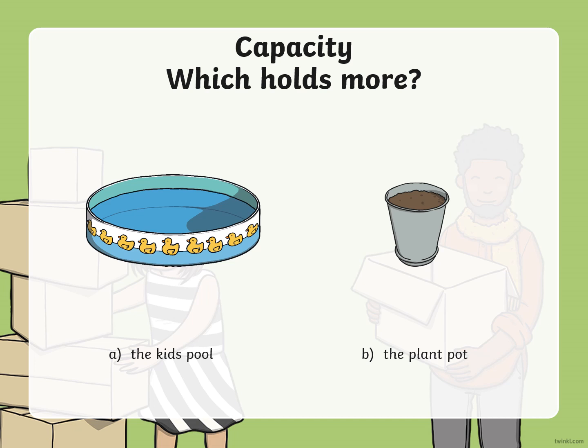These two items. The first one is a kiddies pool — a children's pool — you know those blow-up pools you can put on the grass in summer. You get ones that are quite big, some are a little bit small, but do you think they are bigger than a little pot plant? Yes, the kiddie pool is bigger than the plant pot.